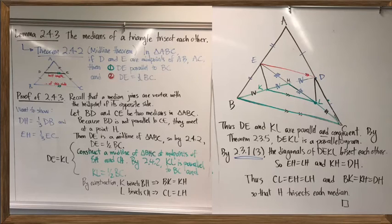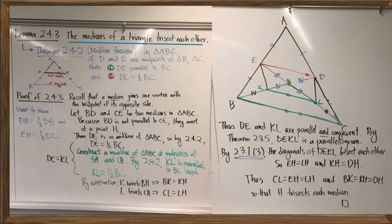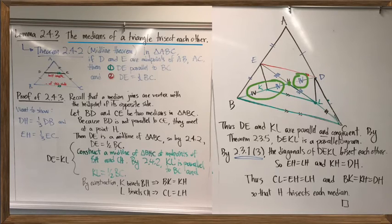That lemma says that the medians of a triangle trisect one another. At the point where two medians intersect — point H on the figure — that point cuts each median into two segments in a ratio of two to one. To the left of H is a segment twice the length of the segment to the right of H, and likewise on the other median.